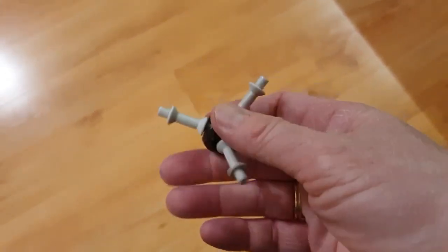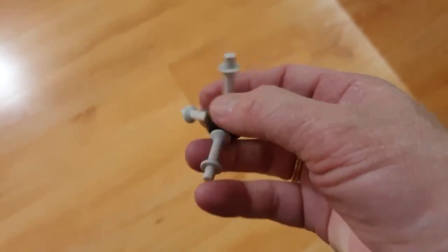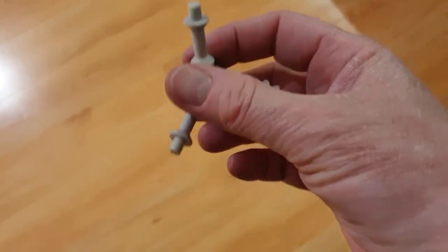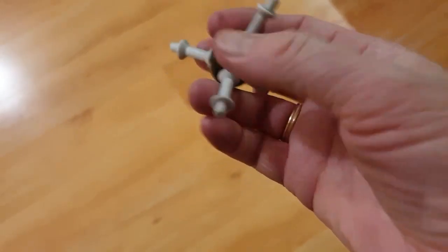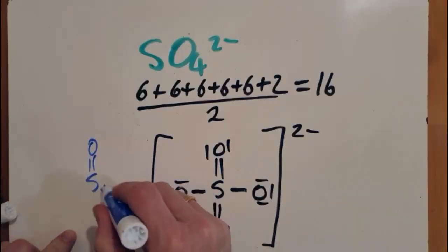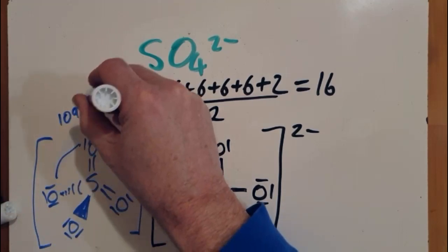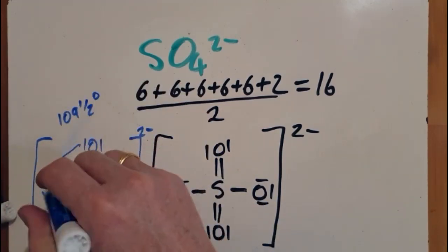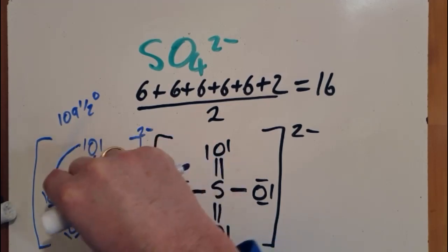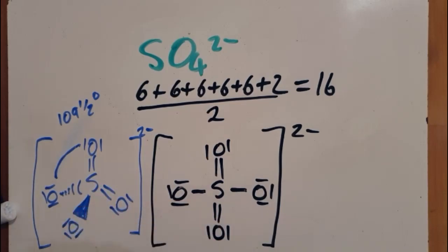So with the four electron domains, which the sulfate ion has, these electron domains are trying to get as far away from each other as possible. And so if four things want to get as far away from each other as possible, they're going to adopt the tetrahedral arrangement. 109 and a half degrees for the bond angle there. But isn't this double bond going to be more repulsive? Don't forget, they aren't really double bonds. They're all one and a half bonds.